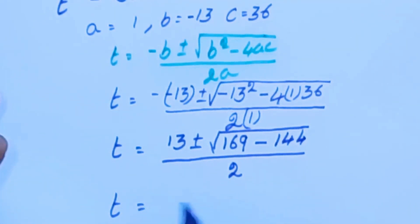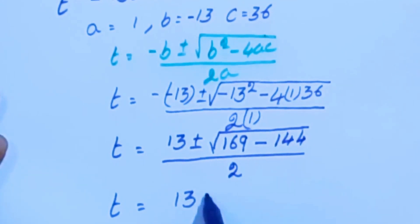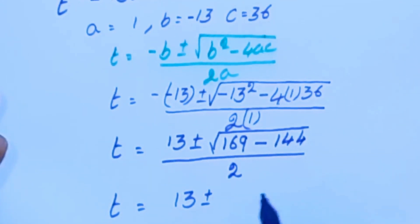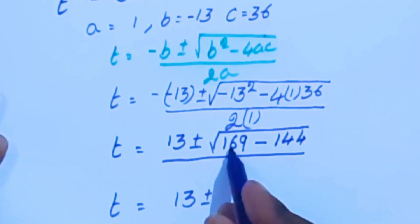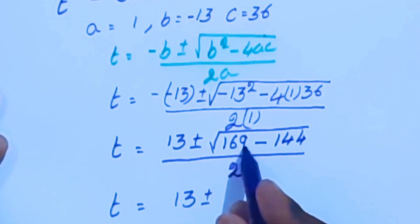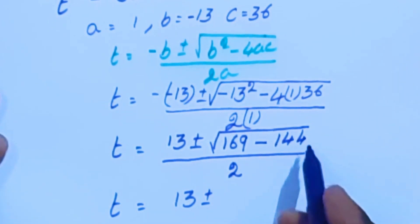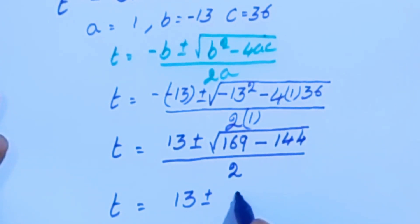So t equals 13 plus or minus square root of (169 minus 144), which is the square root of 25, divided by 2.